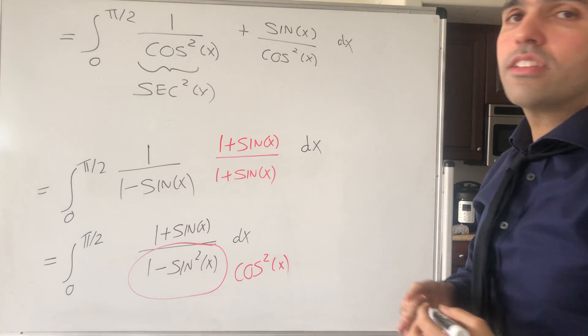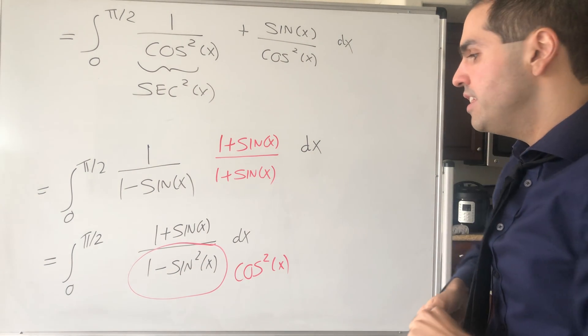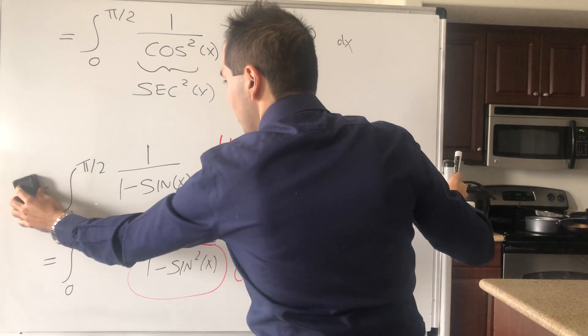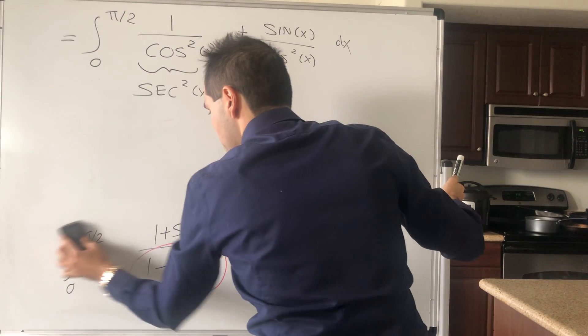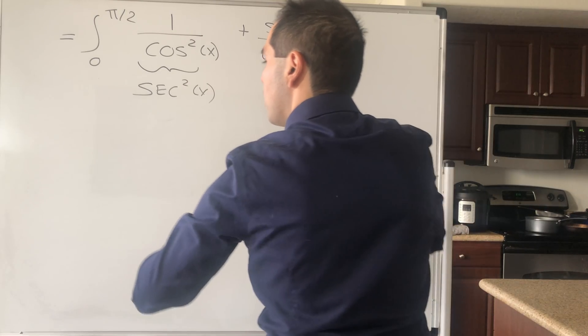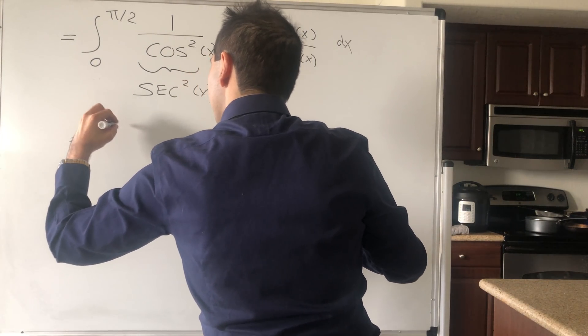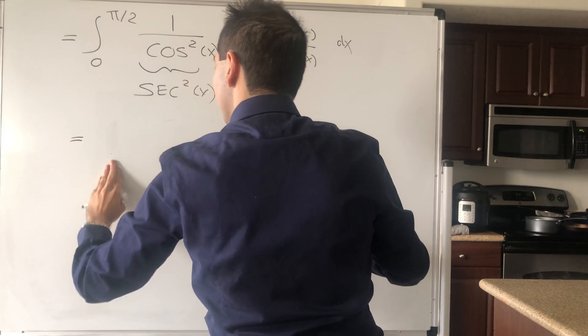The nice thing is one antiderivative of sec²(x) is easy to find—it's just tangent. So that's just tan(x).